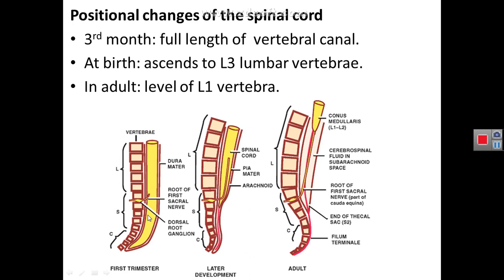There is a peculiar feature of spinal cord development. The spinal cord fills all the vertebral canal during intrauterine life until the third month. After that, the vertebral column grows more rapidly than the spinal cord. Therefore, at birth the spinal cord ends at the level of the third lumbar vertebra (L3). In adulthood, as the vertebral canal grows further, the lower end of the spinal cord ascends to L1.